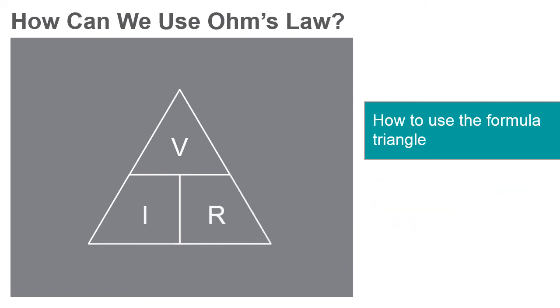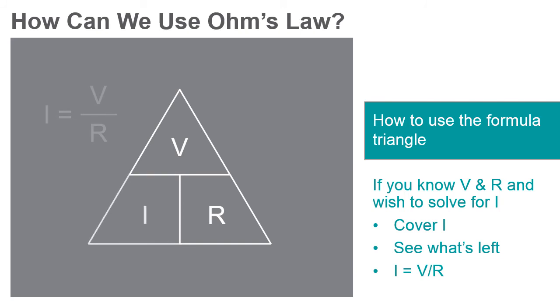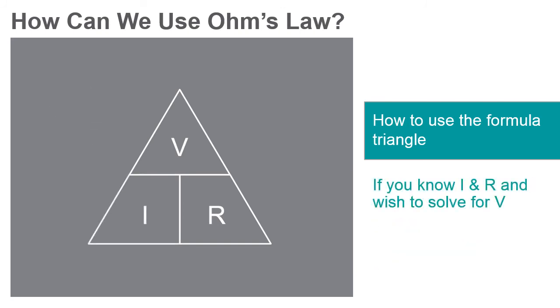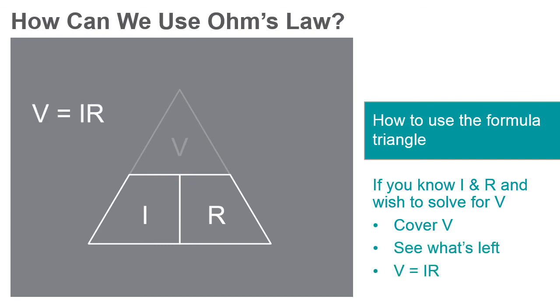This method works for solving any of the formula's values. If you wish to solve for current in a circuit and only have voltage and resistance, I equals V over R. If you know the resistance and current and wish to determine voltage, V equals I times R.